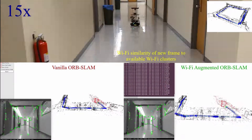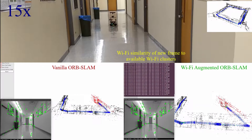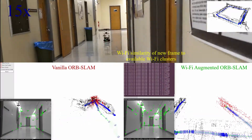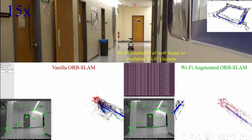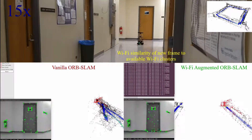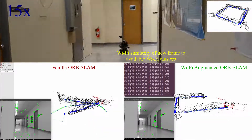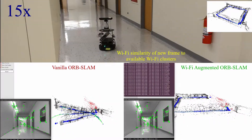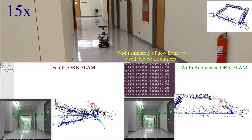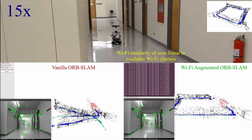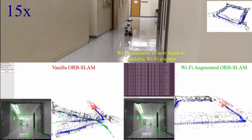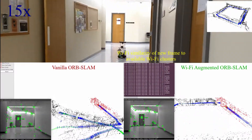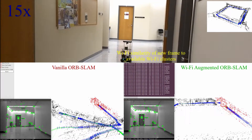Now the TurtleBot is observing some scenes which are very similar to some frames in the first aisle. This causes perceptual aliasing and the robot makes a very wrong loop closure in vanilla ORB-SLAM. However, in the Wi-Fi augmented version the algorithm refuses the loop closure due to low Wi-Fi cosine similarity between the current keyframes and keyframes of the first aisle.